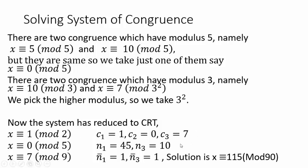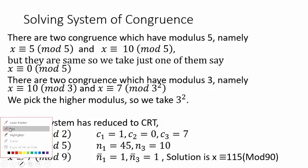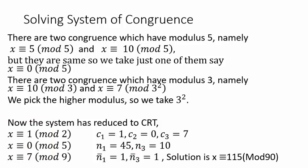Applying CRT to the reduced system, the solution comes out to be x ≡ 115 mod 90, where 90 = LCM(2,5,9). The value 115 can be replaced by its residue mod 90. Note that since one of the right-hand side values C₂ = 0, the corresponding term N₂·N₂⁻¹ vanishes, so we only need C₁, N₁, N₁⁻¹ and C₃, N₃, N₃⁻¹ in the CRT formula.